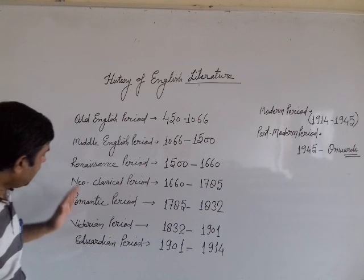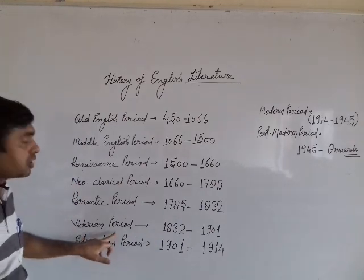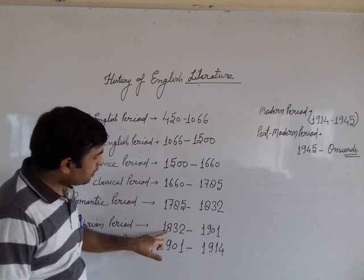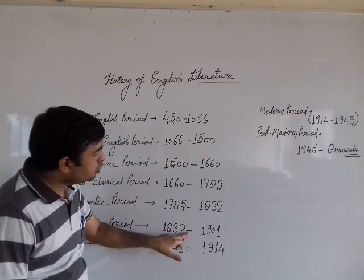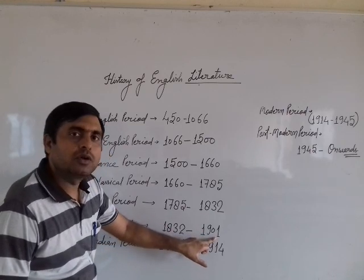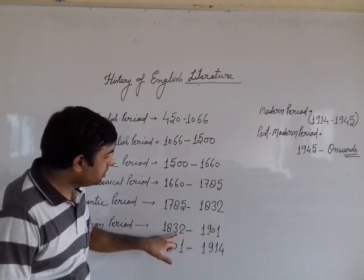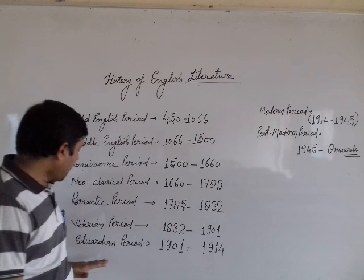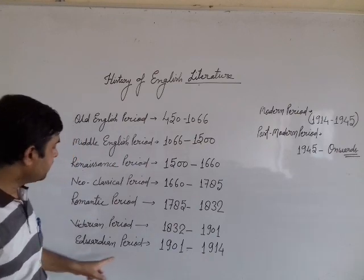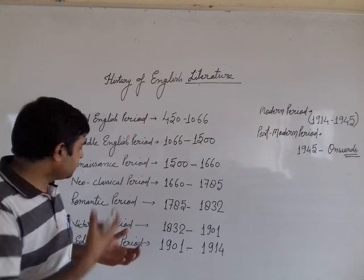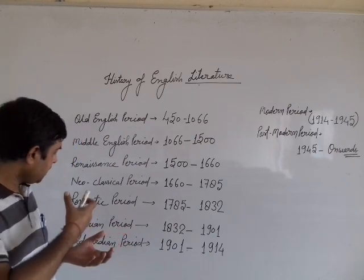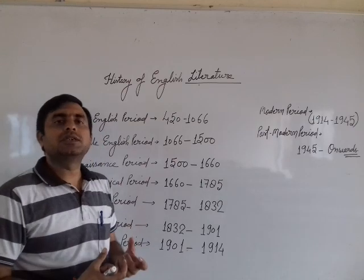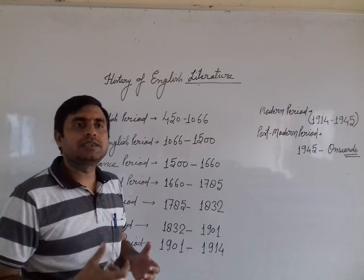After the Romantic Period is the Victorian Period, from 1832 to 1901. And after that comes the Edwardian Period, from 1901 to 1914.